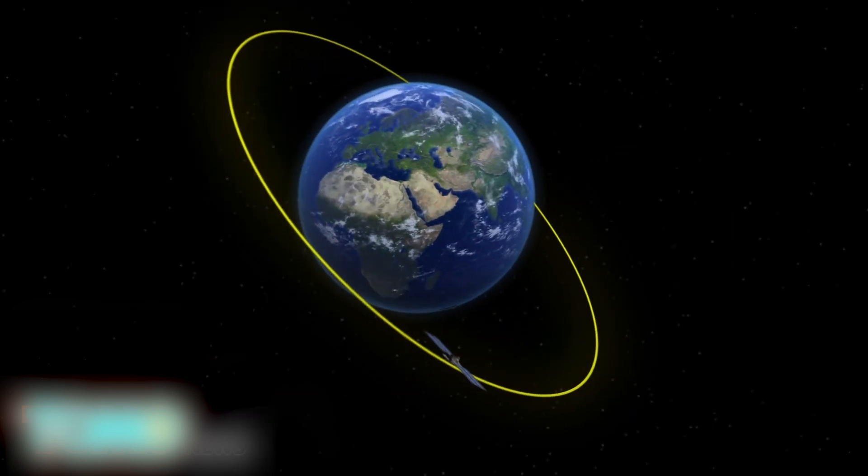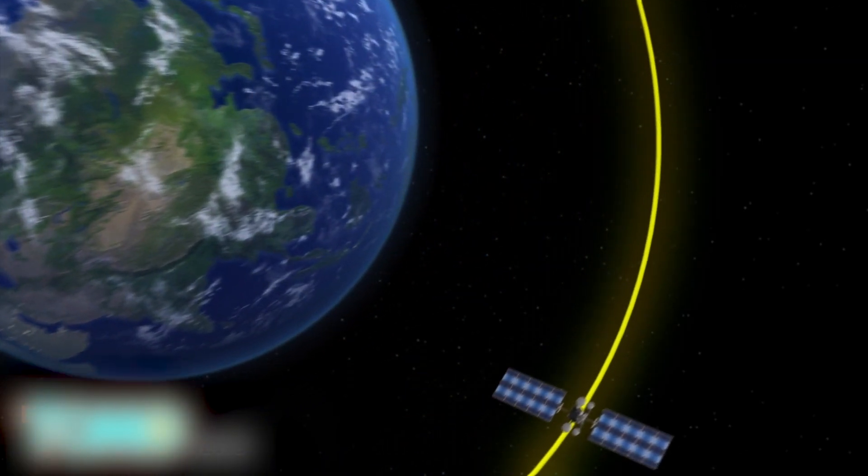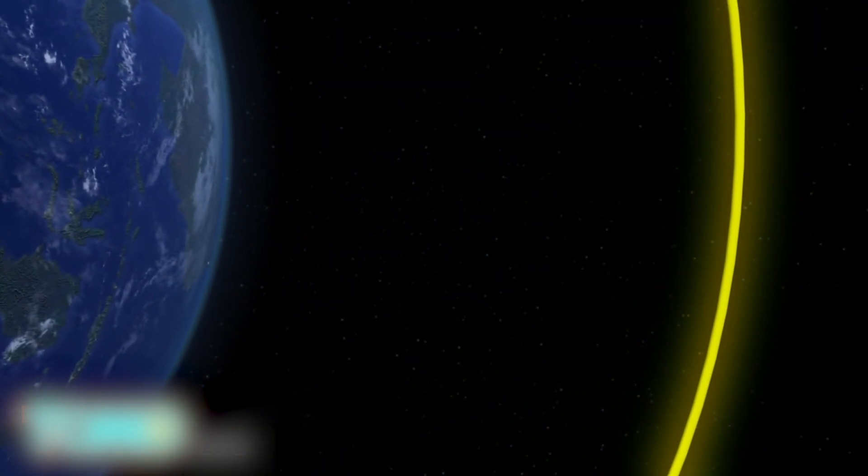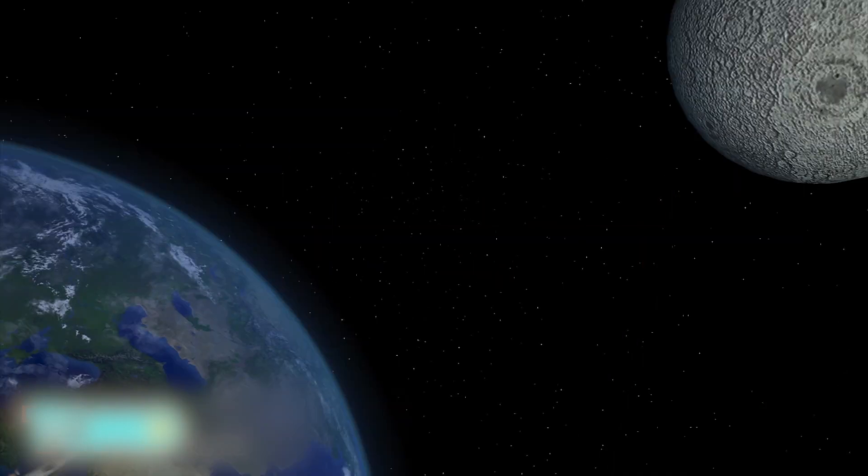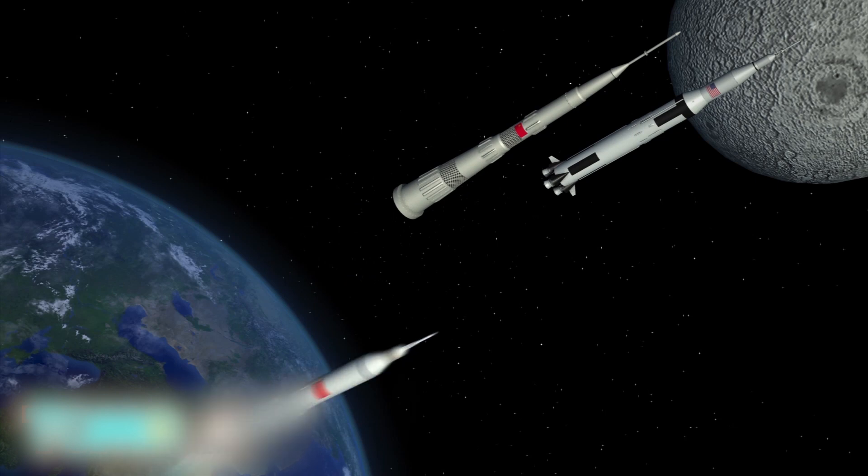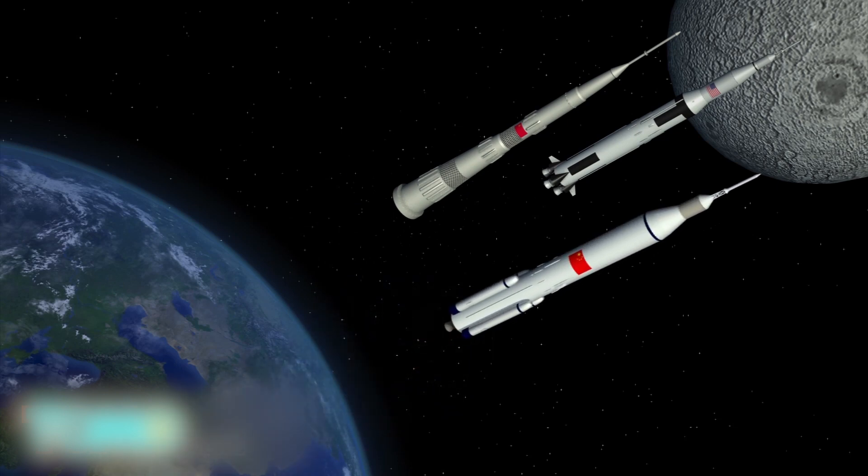At the moment, commercial satellites have only gone as far as the geosynchronous orbit, about 22,000 miles above Earth. Only three nation states, the United States, the former Soviet Union and China, have landed spacecraft on the moon.